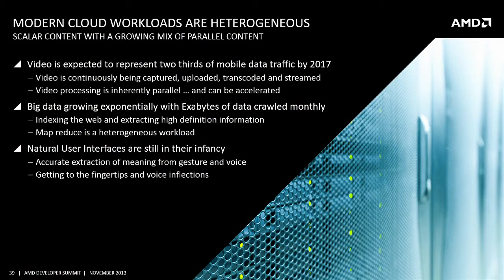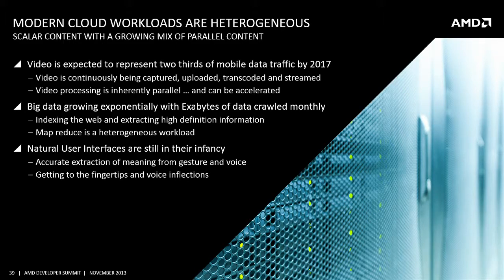Modern cloud workloads are already heterogeneous — they have scalar content and parallel content, and the parallel content is growing and will only grow further. Video is already an enormous component of internet traffic and expected to represent two-thirds of mobile data traffic by 2017. This means video is constantly being captured, processed, uploaded, transcoded, image quality enhanced, recompressed, and streamed. This is inherently a parallel process, and it can be — and will be — accelerated.